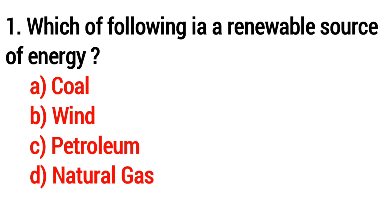Question 1. Which of the following is a renewable source of energy? Option A: Coal. Option B: Wind. Option C: Petroleum. Option D: Natural gas. The answer is Option B, Wind.